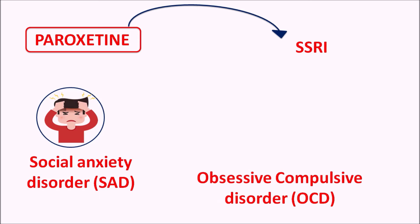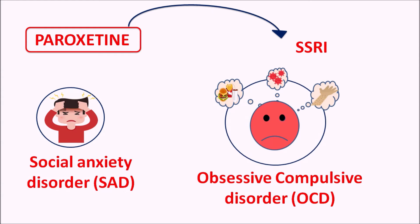In conditions like obsessive compulsive disorder, the patient has obsessions as well as compulsions such as concerns about maintaining hygiene, risk of infections, and eating habits. All these conditions may increase anxiety as well as irritability within the patient, collectively known as obsessive compulsive disorder. In both of these anxiety disorders, paroxetine can be given.